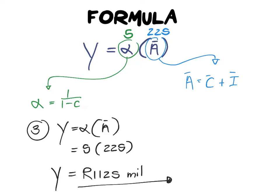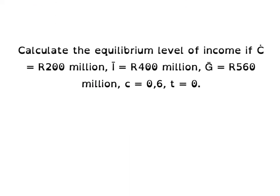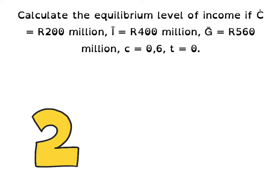Let's proceed to our second example. Calculate the equilibrium level of income if C-cap is equal to 200 million, I-cap is equal to 400 million, and G-cap is equal to 560 million — representing autonomous consumption, investment spending, and government spending. Additionally, you are given c equal to 0.6 and t equal to 0, where c is our marginal propensity to consume and t is our tax rate.